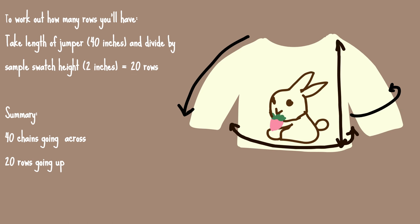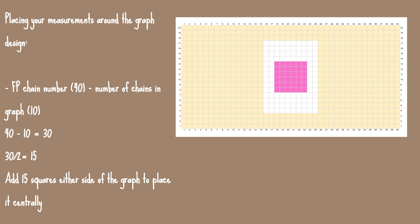So far we have 40 chains going across and 20 rows going up for our front panel. To place the graph into your jumper measurement, take your front panel chain number — 40 chains — and subtract the number of stitches in your graph going across, which is 10, giving 30. Then divide 30 by 2, which is 15. This number tells you how many stitches to add either side of the graph, so 15 stitches on the left and 15 on the right — 10 stitches in the row now becomes 40.